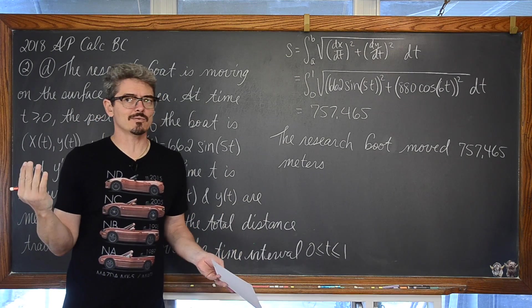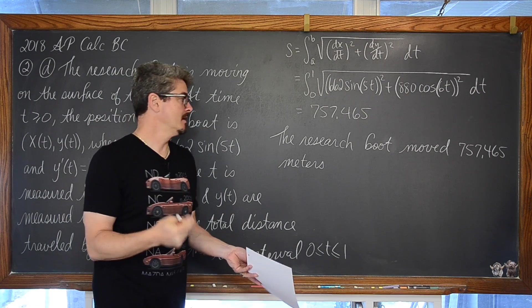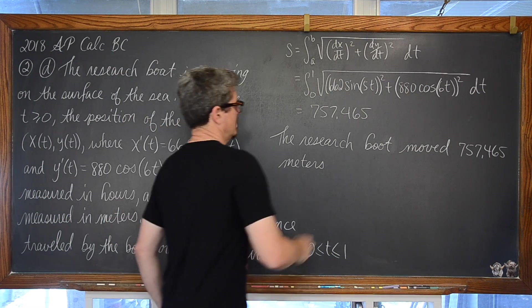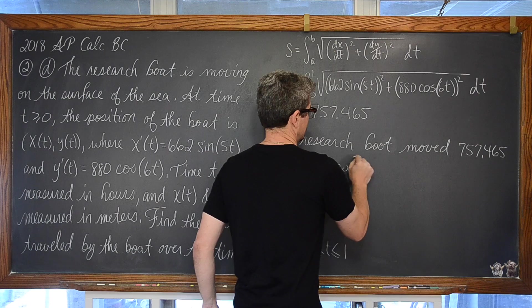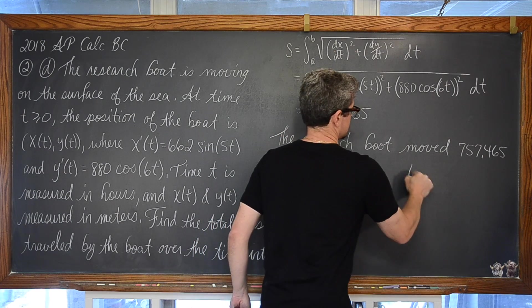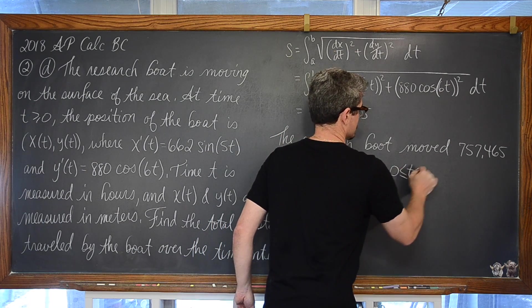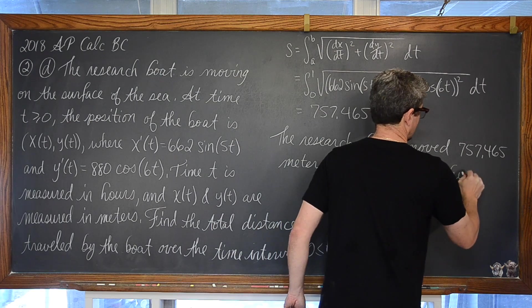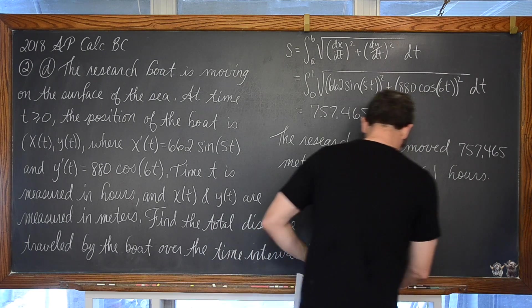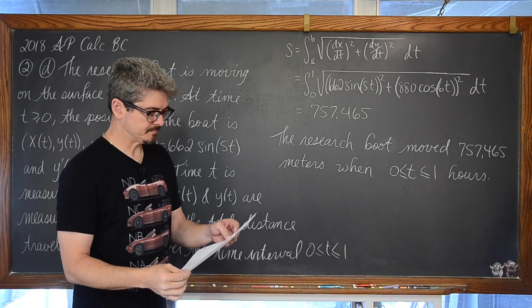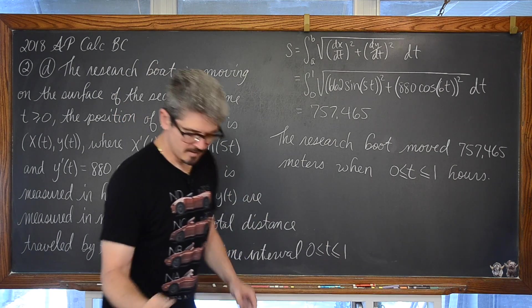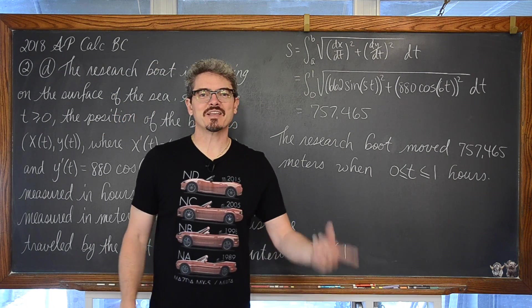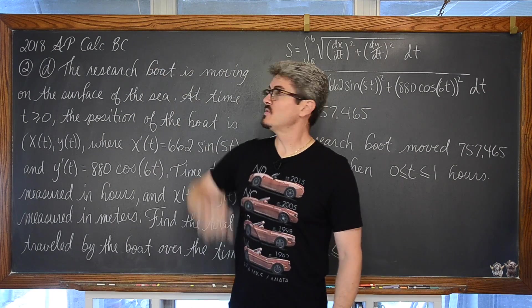Maybe, I don't know, for some reason time 0 is not sort of the initial time. But, between the time periods or when t was greater than or equal to 0 and less than and equal to 1 hours. Let me just make sure I am happy with that. Perfect. And that is number 2 from the Calculus BC Exam 2018.